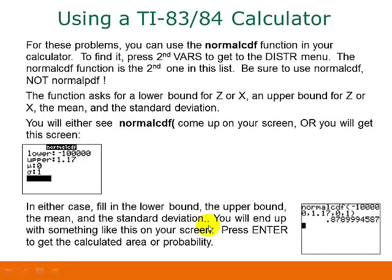Once you do that, you should end up with something like this on your screen. So here we have lower bound, upper bound, mean, and standard deviation. Press enter, and that will give you the calculated area or probability.